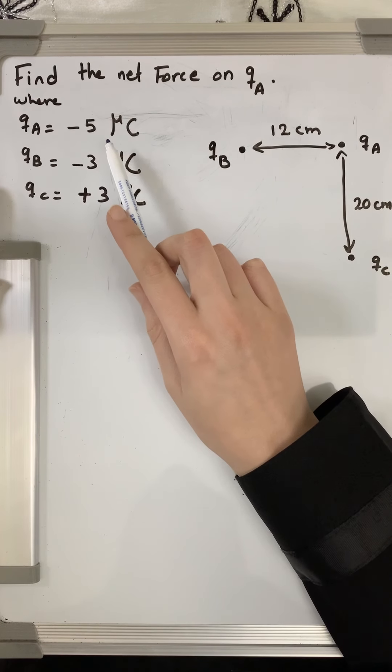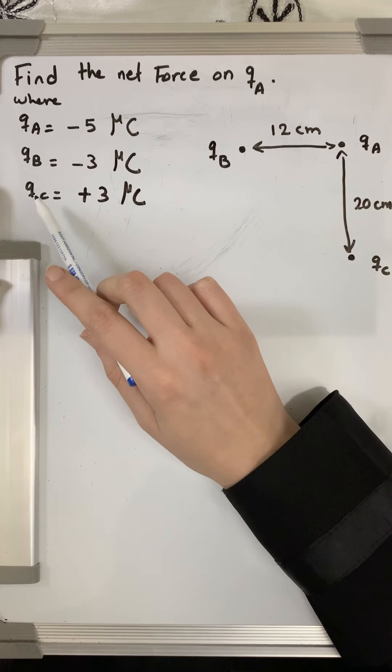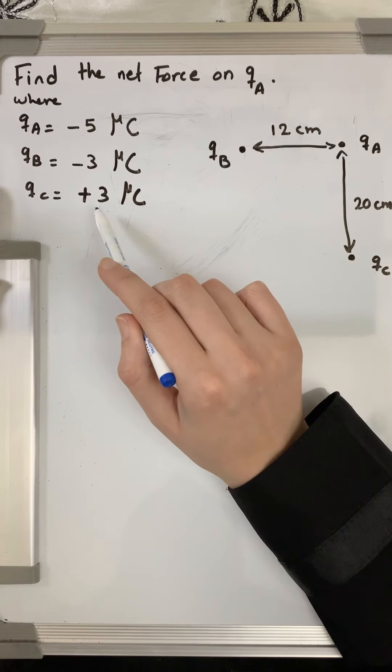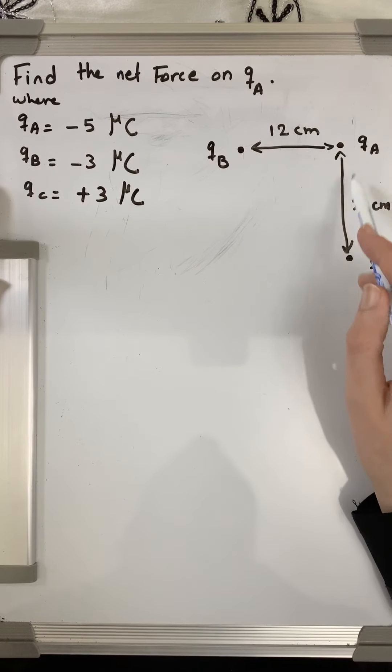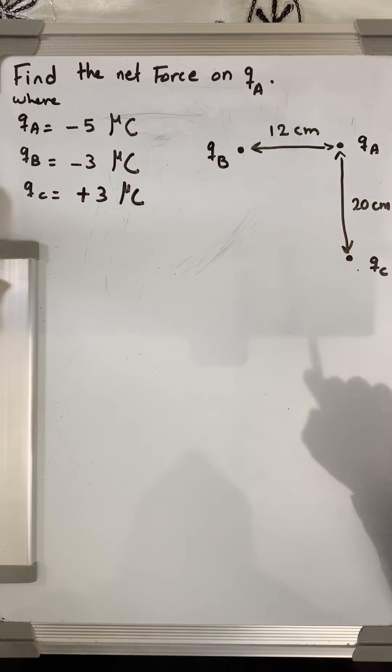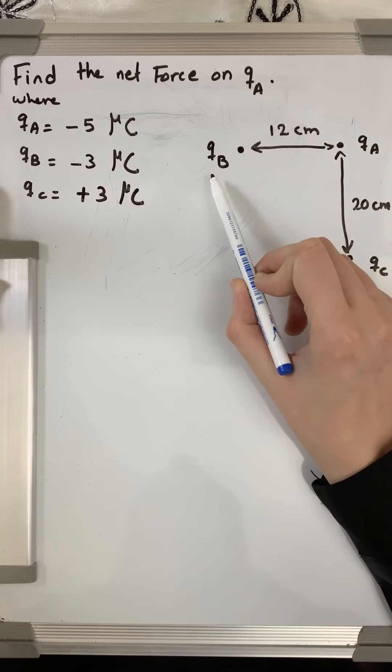qa equals negative 5 microcoulombs, qb equals negative 3 microcoulombs, and qc is positive 3 microcoulombs. The three charges are arranged as you can see here in the figure. qa is at this point, qb is...